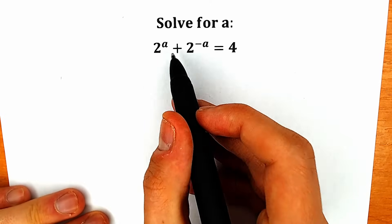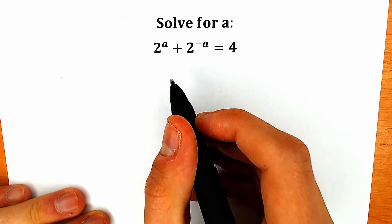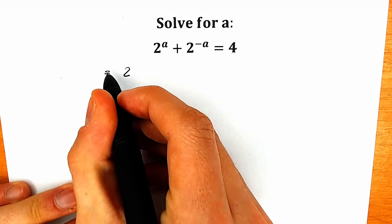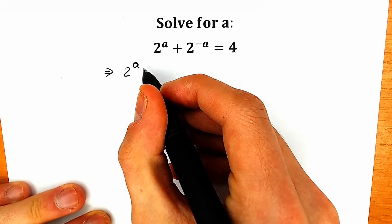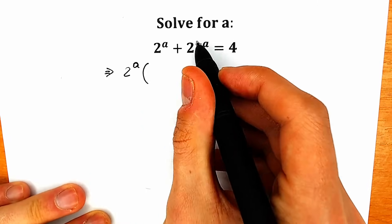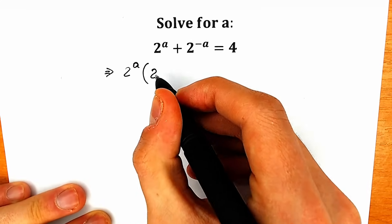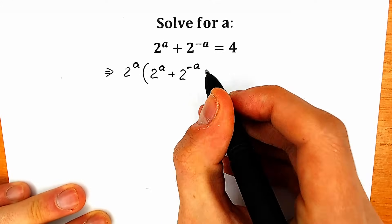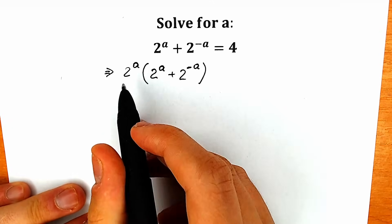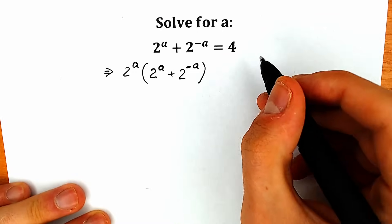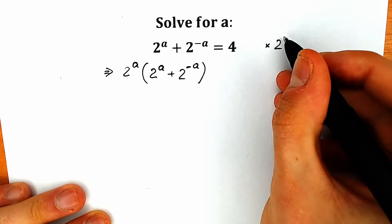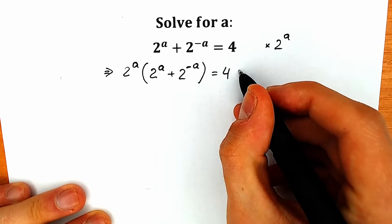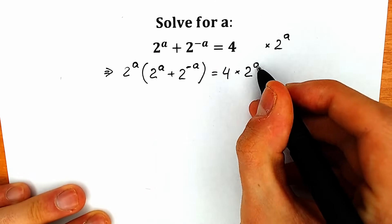First of all, let's multiply both sides by 2 to the power a. So on the left side we are multiplying by 2 to the power a, giving us 2 to the power a times the expression (2^a + 2^(-a)), and on the right side we have 4 times 2 to the power a.